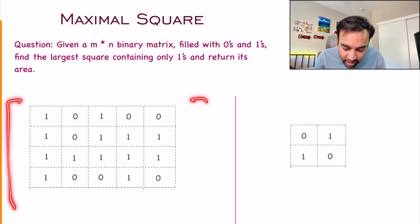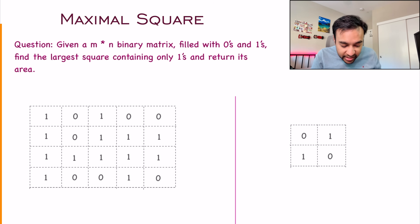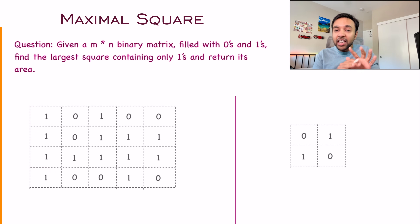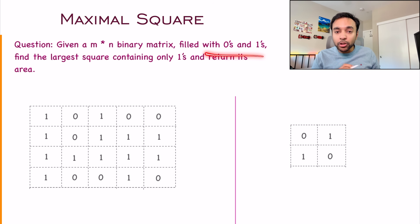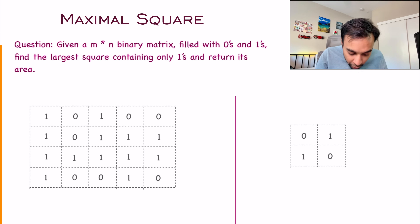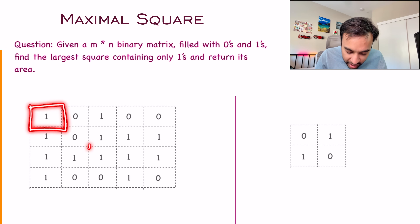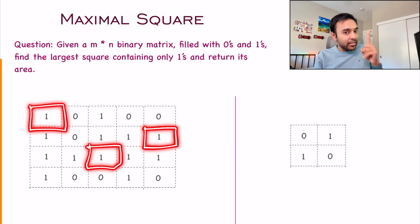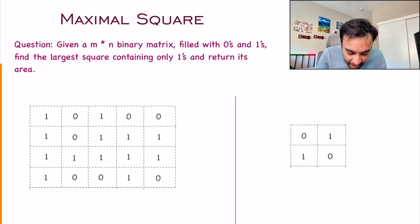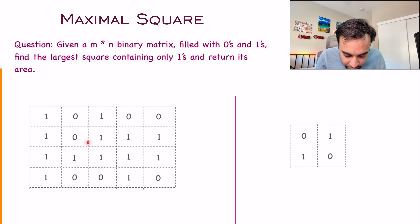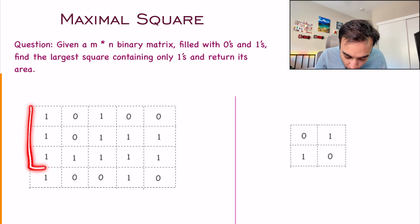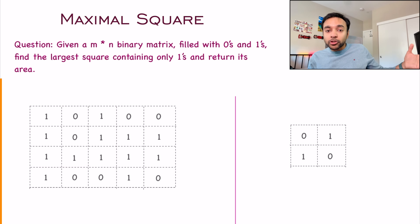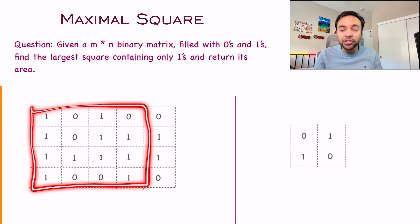For example, looking at the first test case, it has four rows and five columns — an m cross n matrix filled with zeros and ones. There can be many different squares possible. For example, there are squares of side one at various positions. But there can also be bigger squares — for example, a square of side two, and even bigger squares.